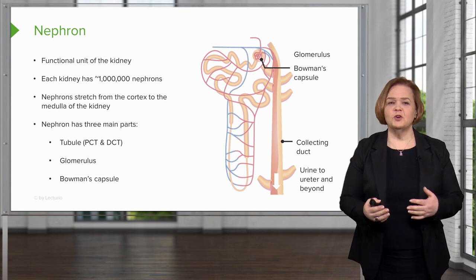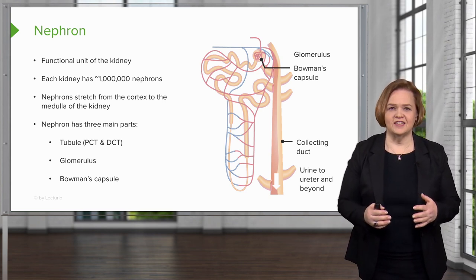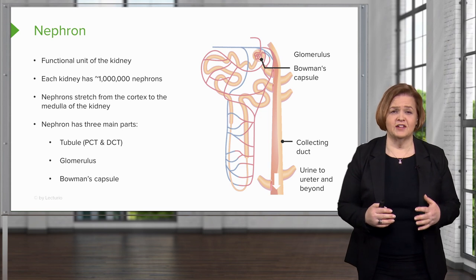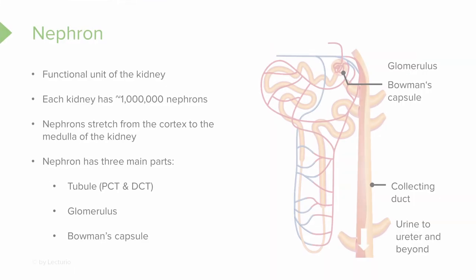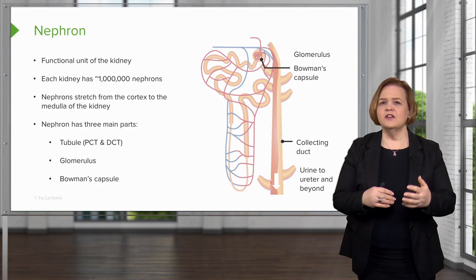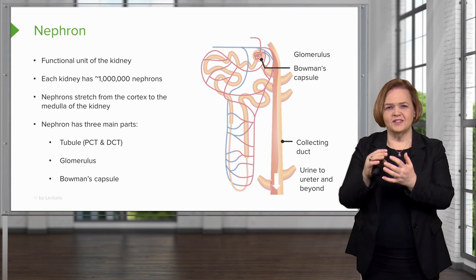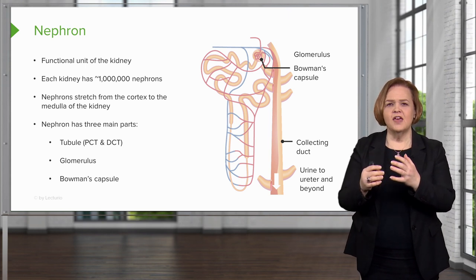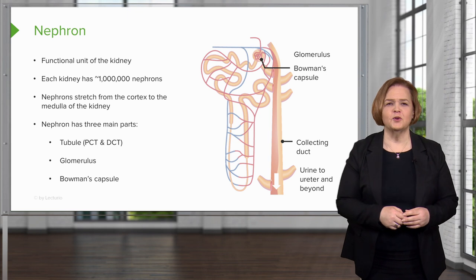Here's a quick review of the nephron. Remember, each one of your kidneys has a million nephrons. You can see the glomerulus — that's the tangle of capillaries surrounded by Bowman's capsule. As your blood goes through there, it squishes out the solutes into the filtrate that filters through the rest of the nephron. The nephrons go from the cortex to the medulla of the kidney.